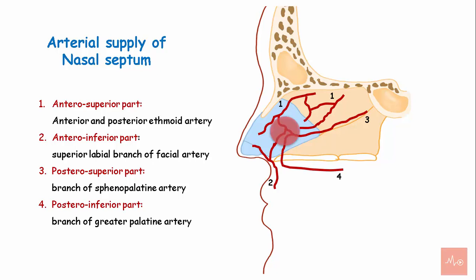These vessels form a large capillary network at the anteroinferior part of the nasal septum, which becomes the common site of bleeding from the nose and is called Little's area.